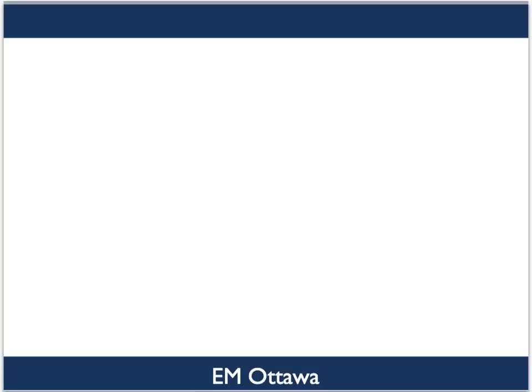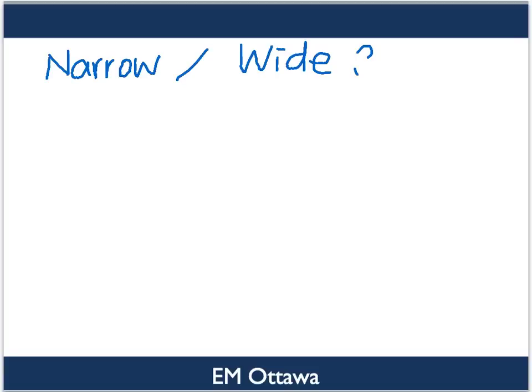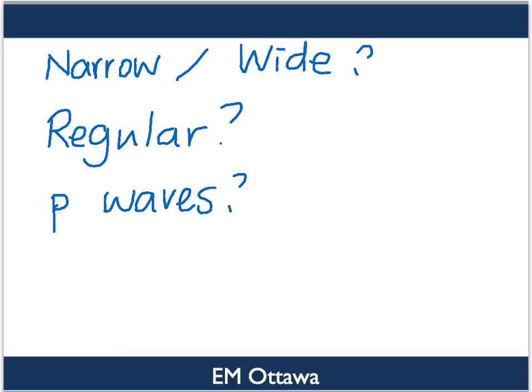To summarize, we talked about how to approach tachycardic rhythms. We discussed the three classifications: one, whether the QRS complexes are narrow or wide; two, whether the rhythm is irregular or regular; and three, whether there are P waves available. These classifications will allow you to identify tachycardic rhythms when seeing your patients.